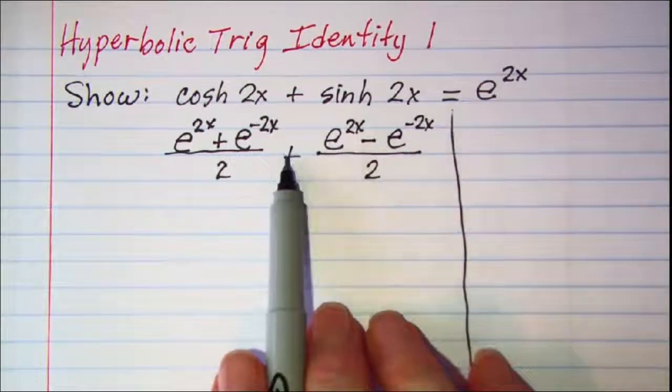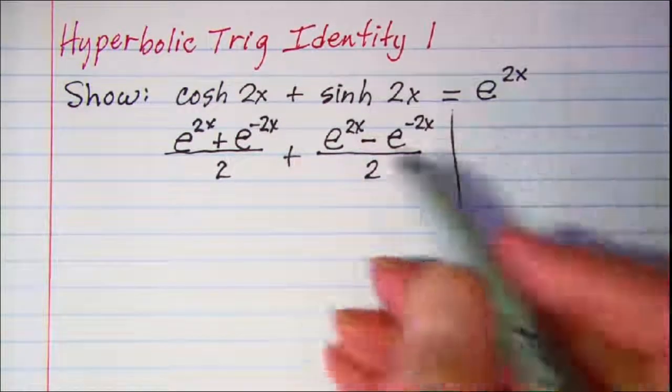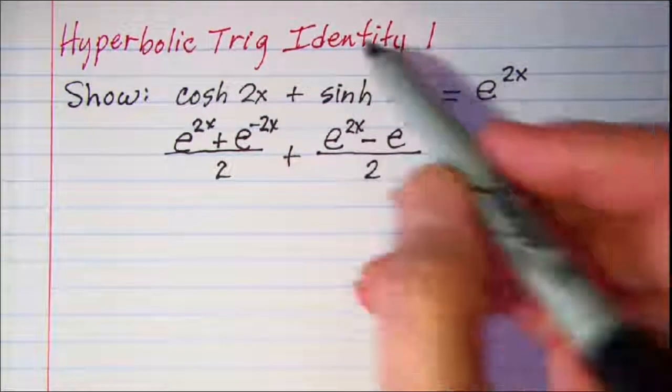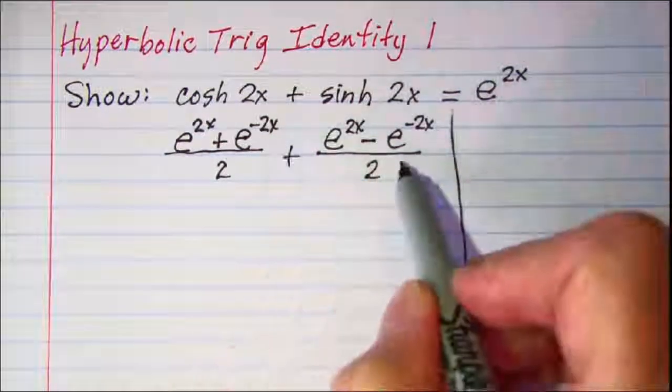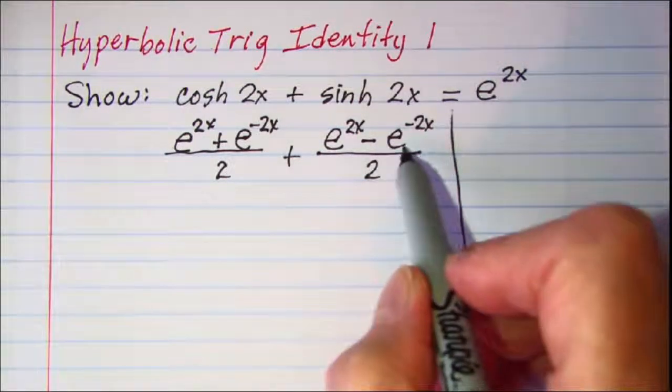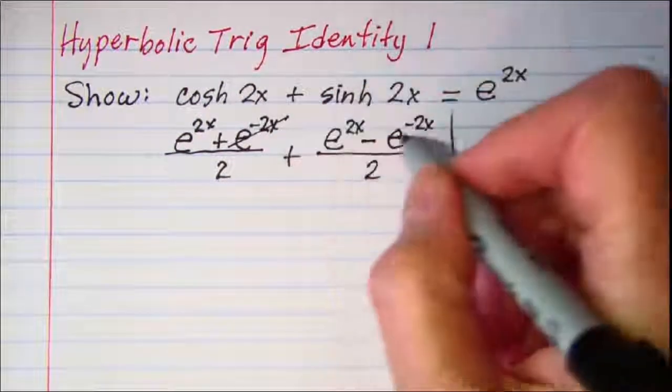We're adding these together and we already have our common denominator, so I can see that this plus e to the negative 2x and this minus e to the negative 2x are opposites, so those will cancel out.